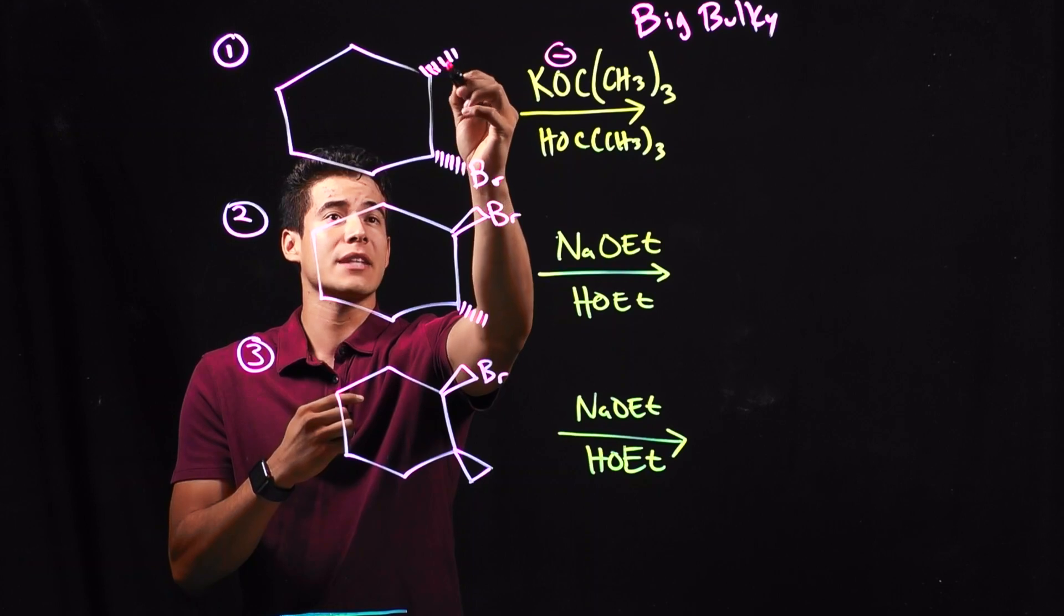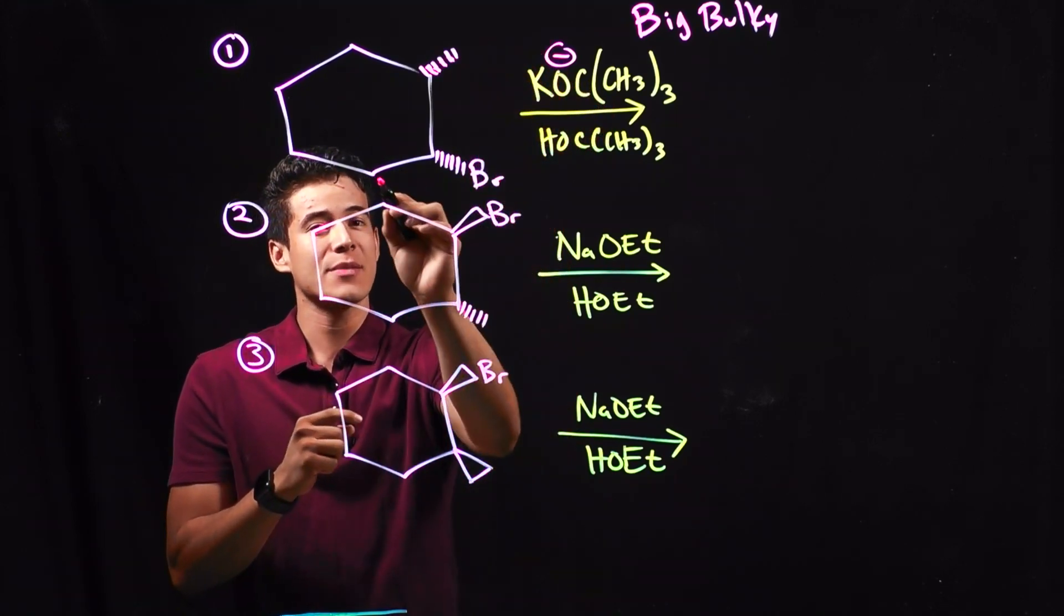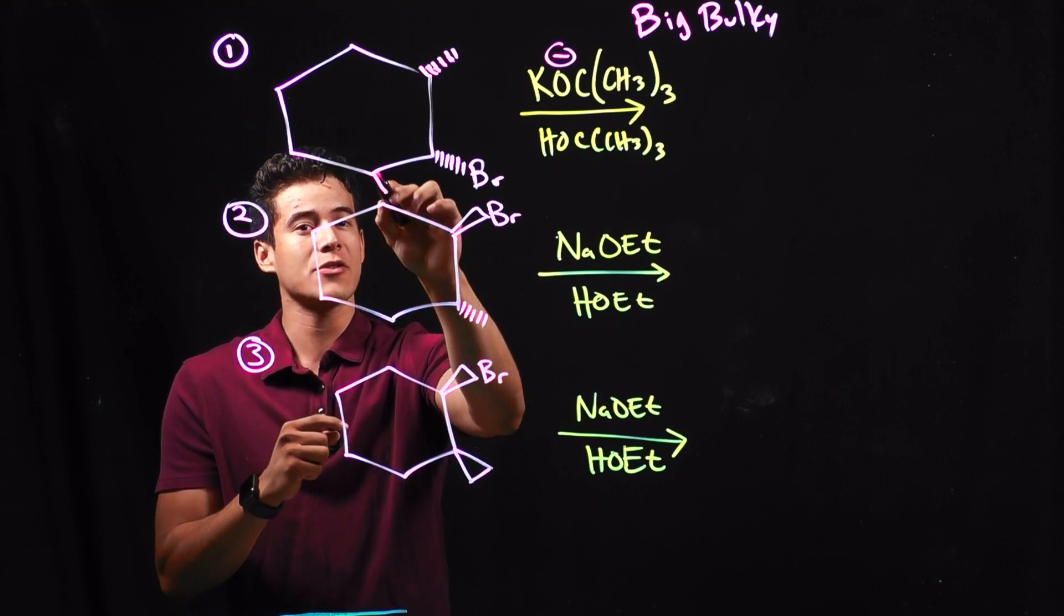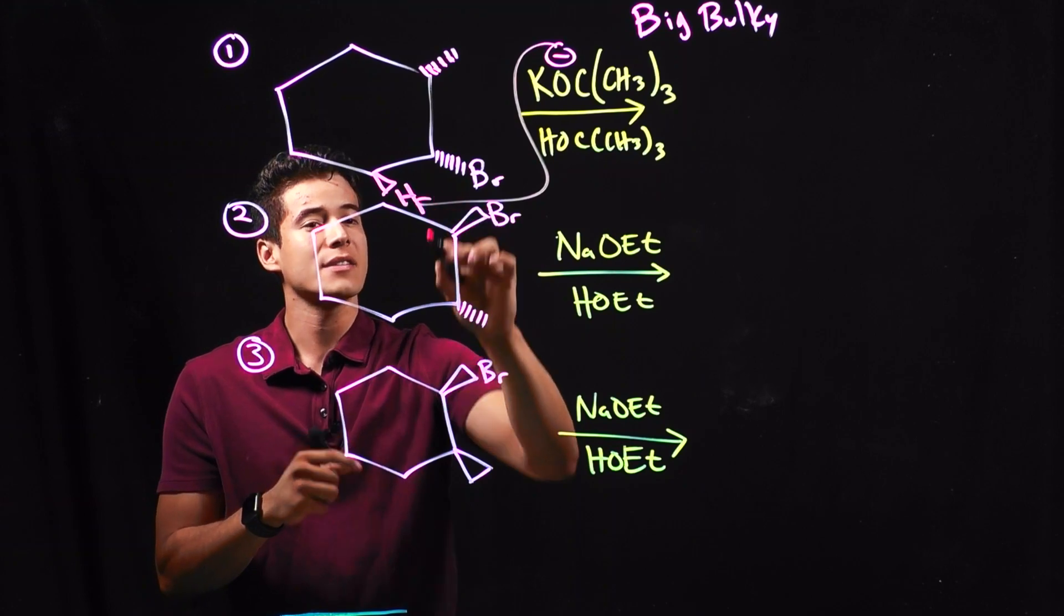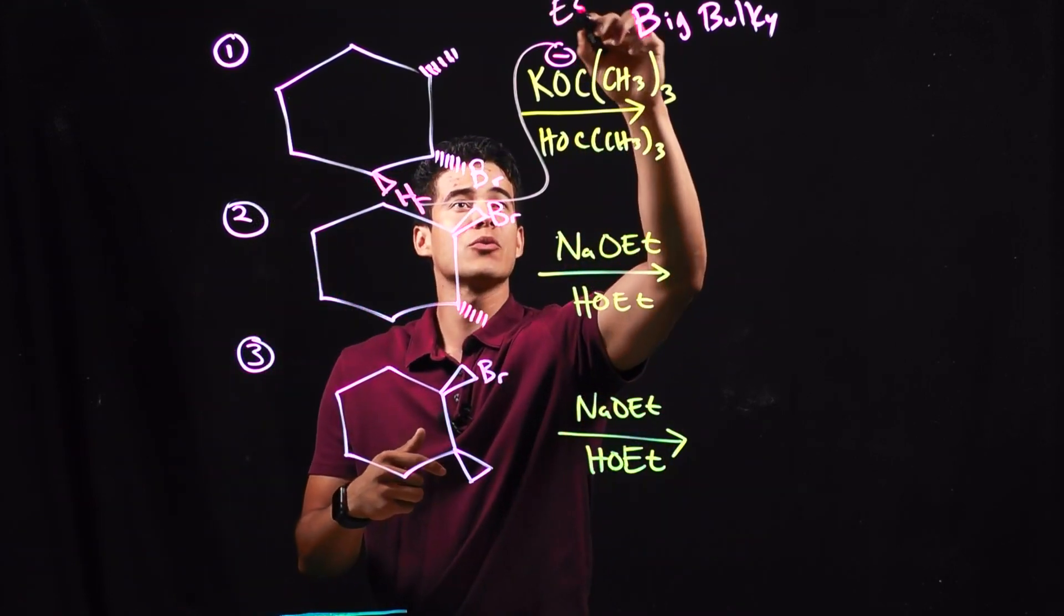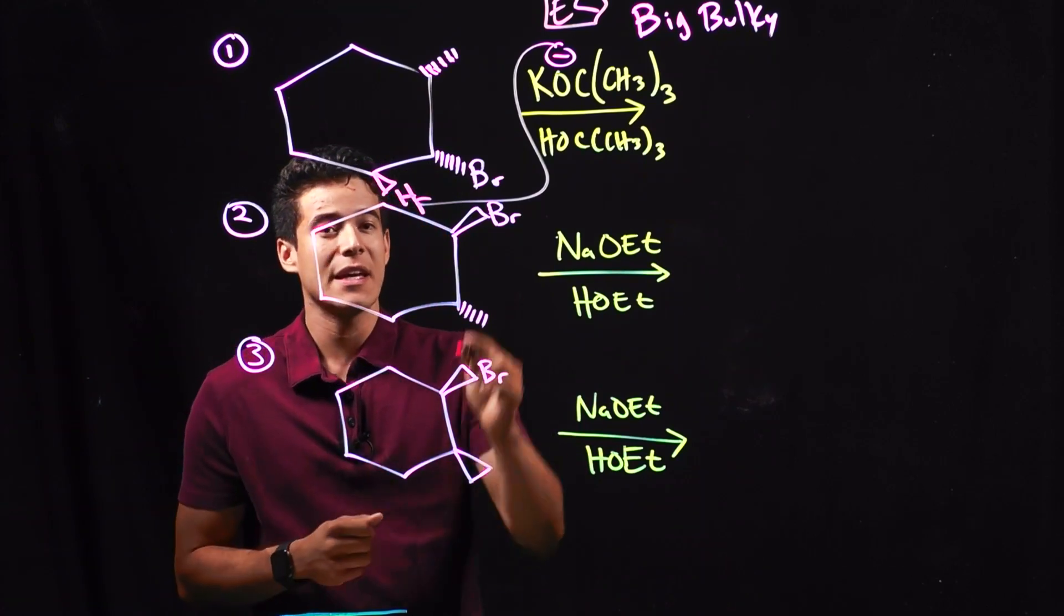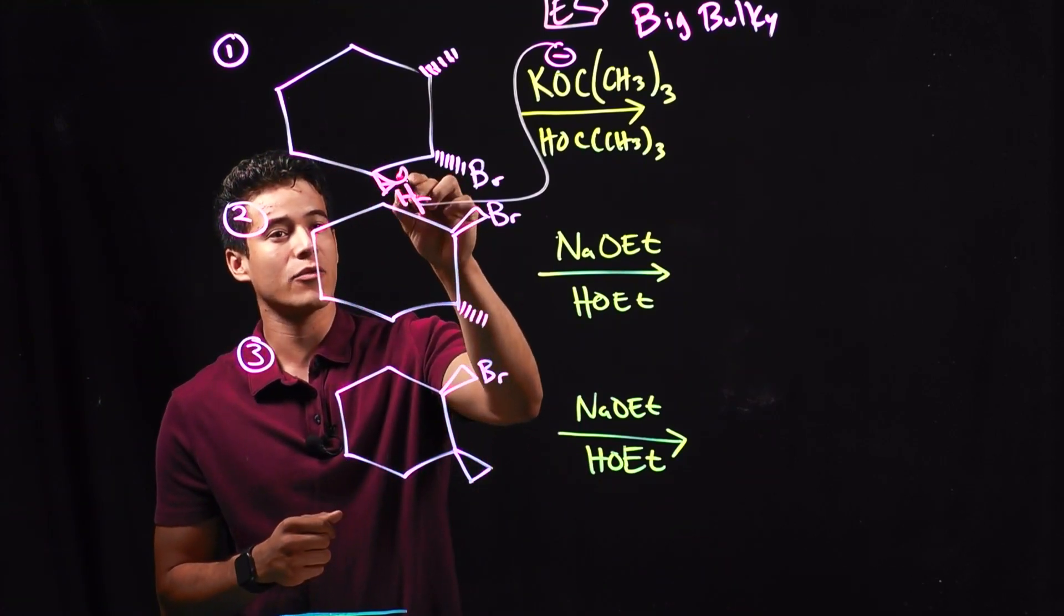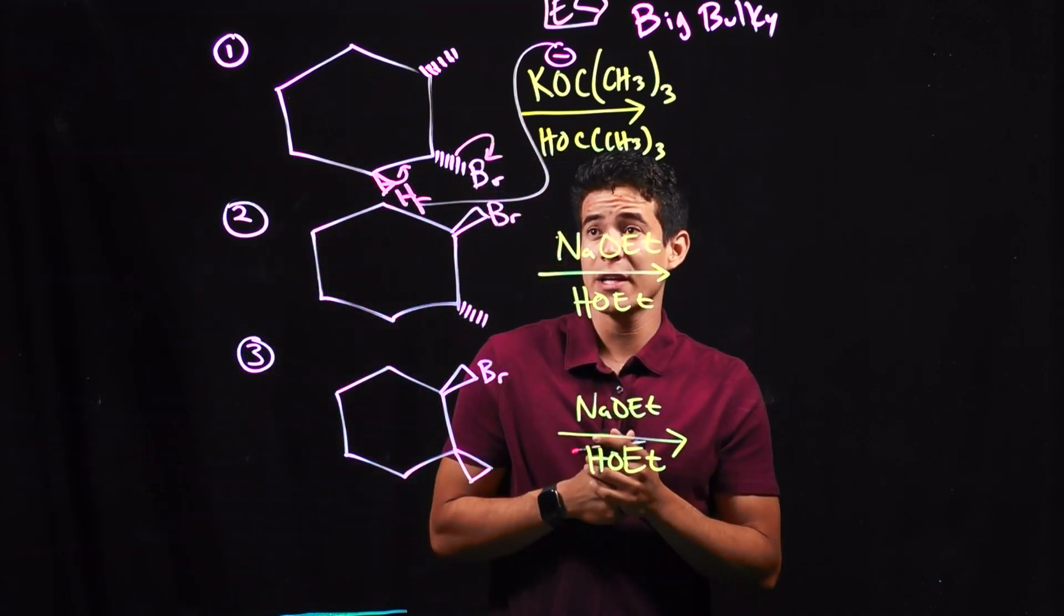So here, I have a CH3 group. That's going to be kind of in the way. So instead of going this route, it's probably going to want to go after a hydrogen maybe that's over here. It's going to go through our E2 reaction. Remember our E2 reactions, and then when it grabs the H, it's going to form the double bond and kick out my Br group.